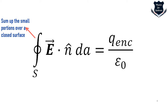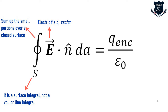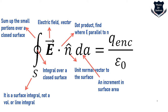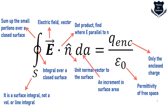What we learned in the earlier video is the integral form of Gauss's law. The integral sign is the sum of portions of a closed surface. E is the electric field (a vector), S is the surface integral over a closed surface, the dot product was explained earlier, n is the unit normal vector, dA is the area increment, and epsilon-zero is the permittivity of free space.